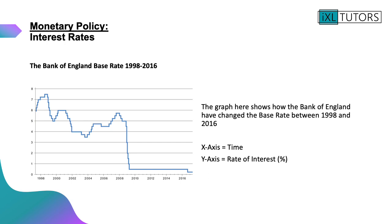This graph here shows you what has happened to the Bank of England base rate between 1998 and 2016. On your x-axis you have time and on your y-axis you have the rate of interest. I'm going to pause that there for you to make some notes on that graph and what it shows about what has happened to interest rates.